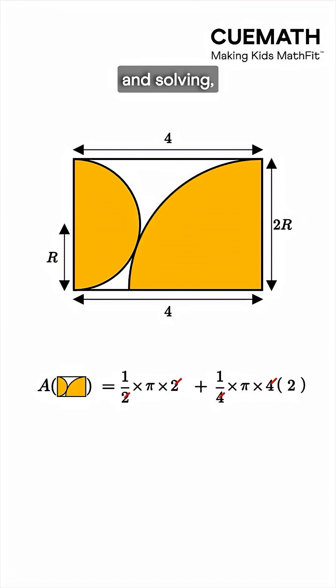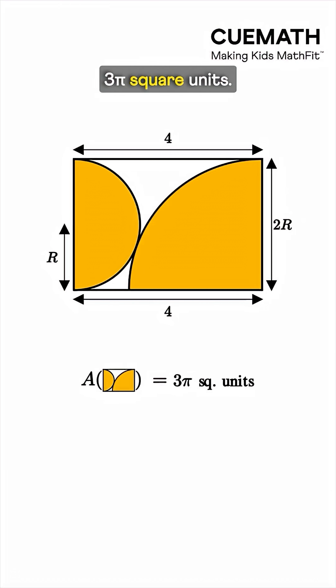Substituting r squared equals 2, and solving, we get the shaded area as 3 pi square units.